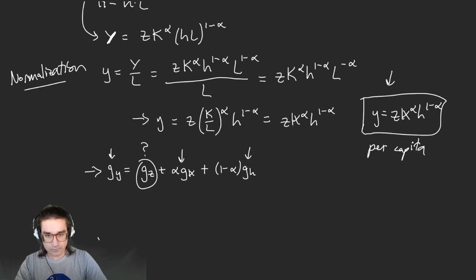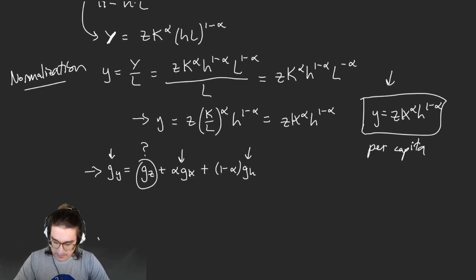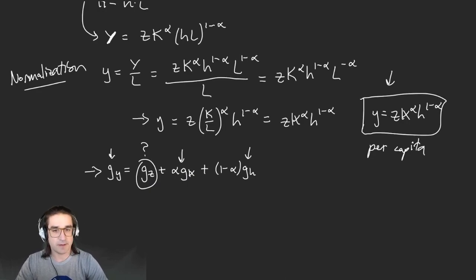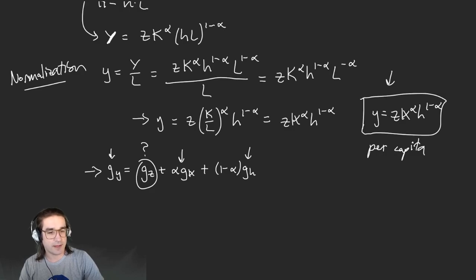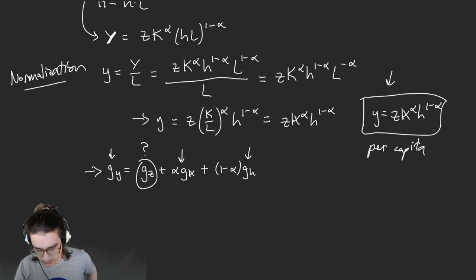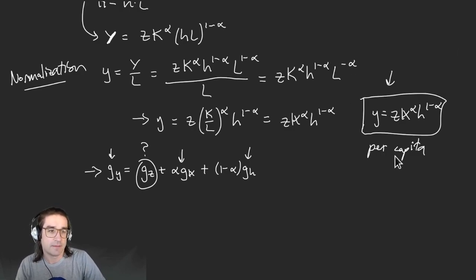It makes it easier to compare across countries and different units. So that's what we did last time — we thought about this per capita production function. Now we can really talk about this notion of growth accounting at the per capita level. The next thing I want to do is turn that into a growth rate equation.